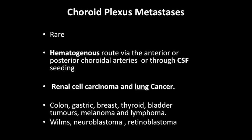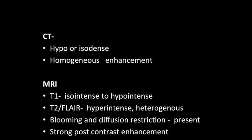Choroid plexus metastases are rare and can spread via the hematogenous route through the anterior or posterior choroidal arteries, or through CSF seeding. Usually the lateral ventricles are the common sites of metastasis, as there is a large amount of choroid within the lateral ventricles. Renal cell carcinoma and lung cancers are the common malignancies which can have choroid plexus metastasis, as in our case.